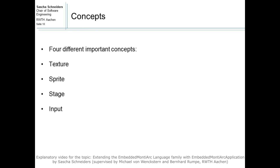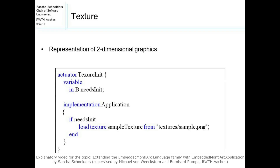Now I am going to explain the most important concepts of our Embedded MontiArc Application language. The four main concepts we introduced when designing the language are textures, sprites, stages, and input. Textures are used to represent 2D graphics that will be displayed later on. They can be loaded from a supplied path and deleted later on when not required. Each texture needs to have a unique name that can be later referenced in different Embedded MontiArc Application components.